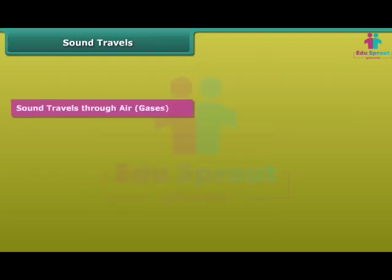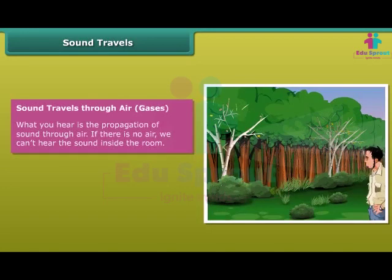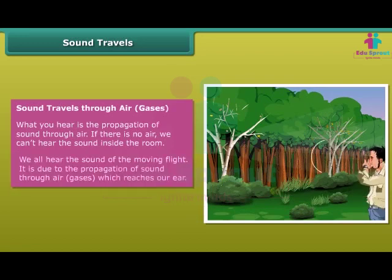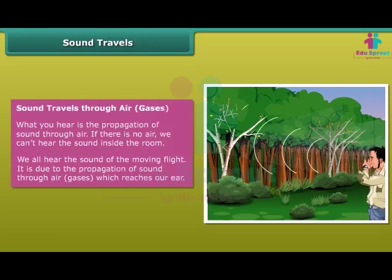Sound travels through air and gases. What you hear is the propagation of sound through air. If there is no air, we can't hear the sound inside the room. We all hear the sound of a moving flight; it is due to the propagation of sound through air and gases, which reaches our ear.